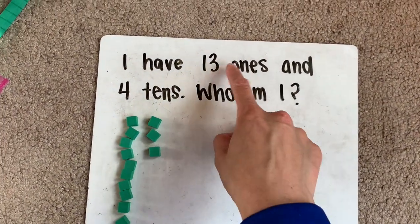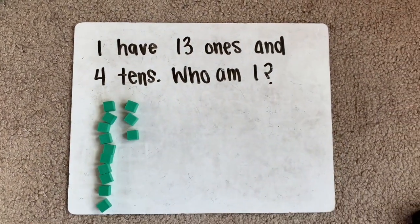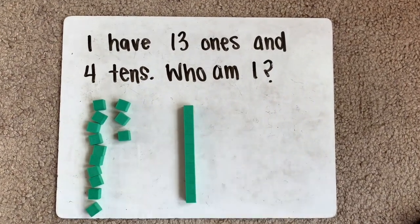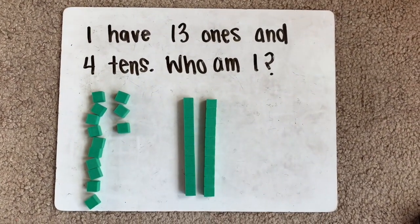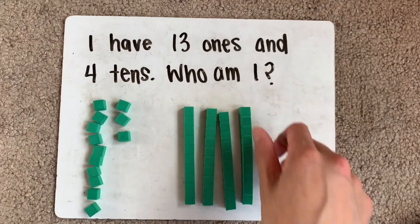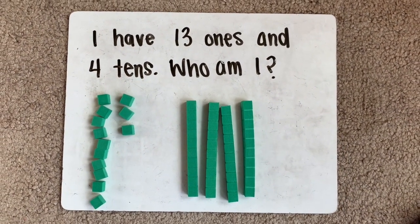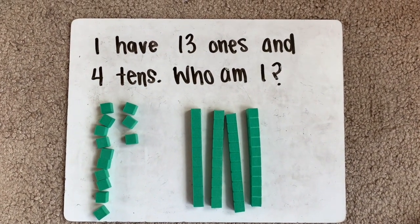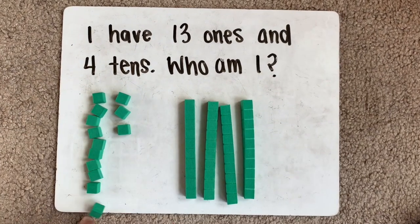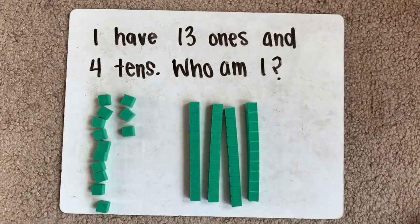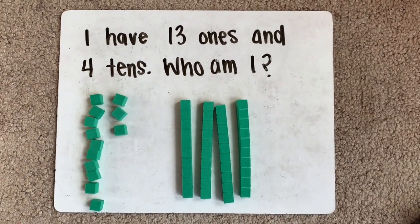Now it says 13 ones and four tens. So let's build four tens. 1, 2, 3, 4 tens. So I know that 13 is also 10 and three more. So I'm going to count all my tens together first.